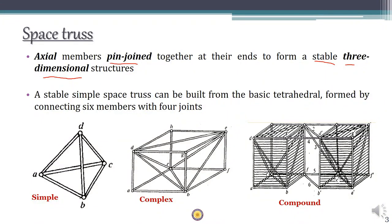We can move to a complex space truss by adding joints and members to this simple truss. Basically we start with a tetrahedron and add some joints and members to go for a complex structure. We can also go for compound structures where two complex trusses are joined together.